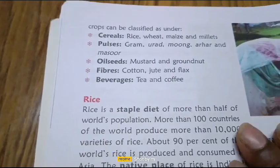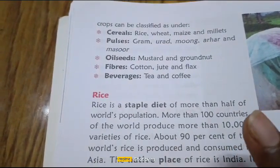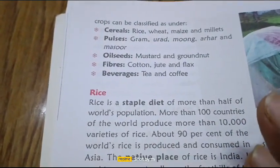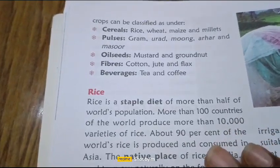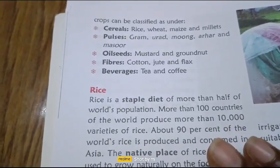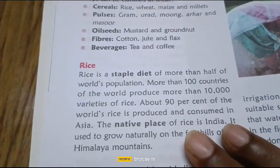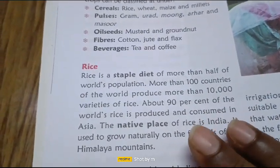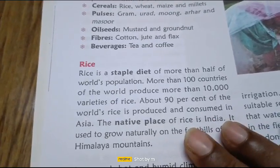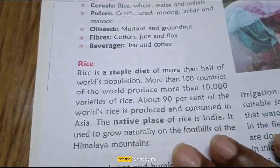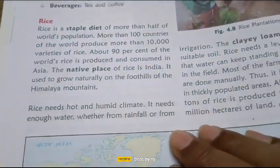Today we will be covering rice, which is a staple diet for half of the world's population. More than 100 countries in the world produce over 10,000 varieties of rice. 90% of the world's rice is produced and consumed in Asia. The native place of rice is India, and it used to grow naturally on the foothills of the Himalayan mountains.